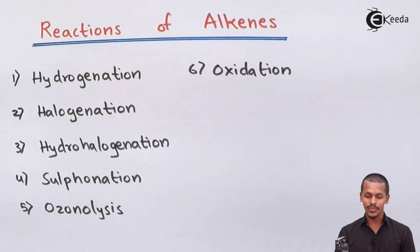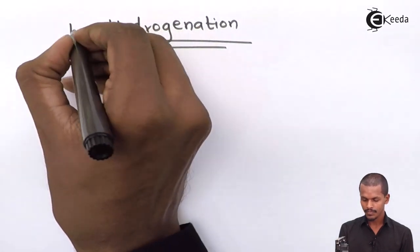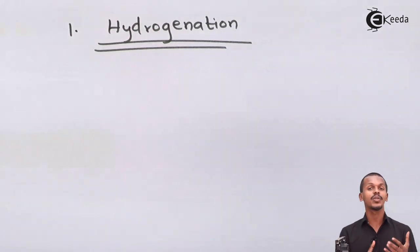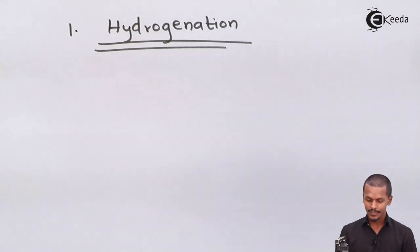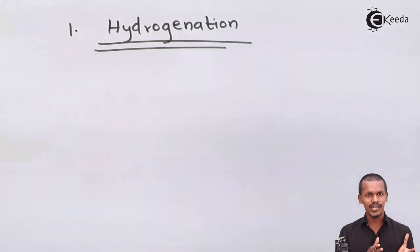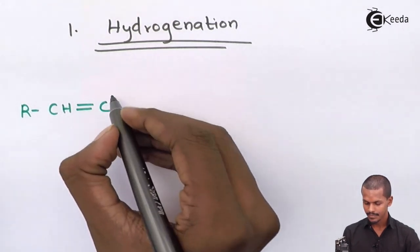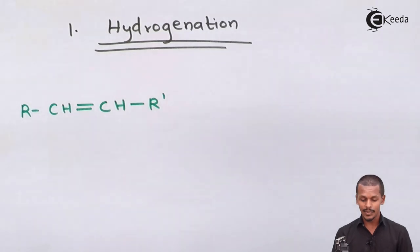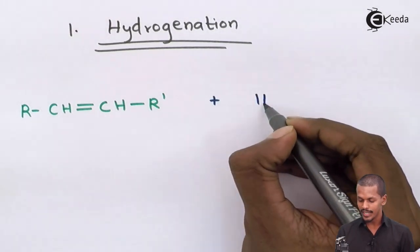Starting with the first one: the hydrogenation process. It is very simple to understand — it is nothing but the introduction of a hydrogen molecule to the alkene, in which the carbon-carbon double bond is converted into a saturated carbon-carbon single bond. Suppose we have an alkene written as a general carbon-carbon double bond.